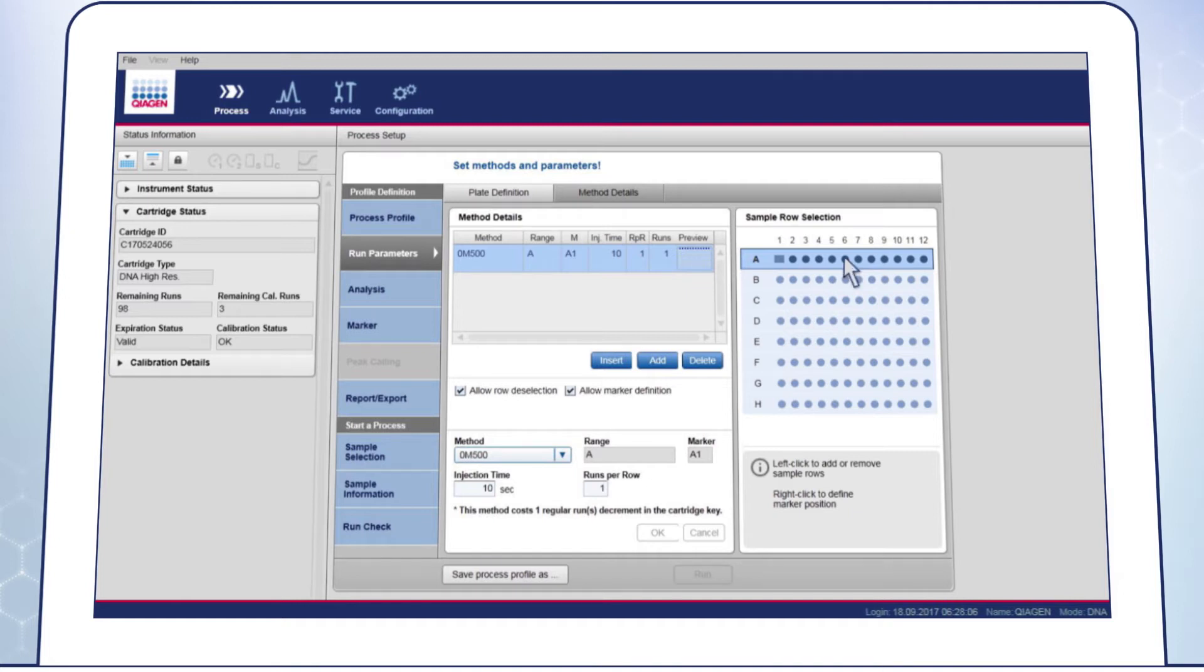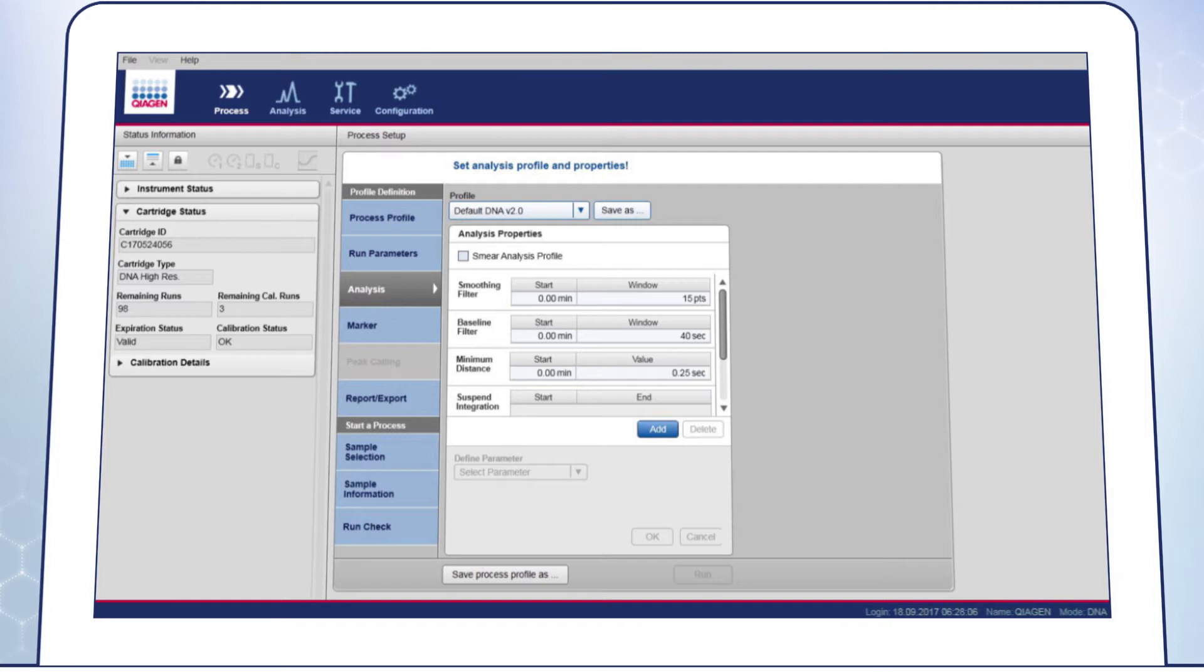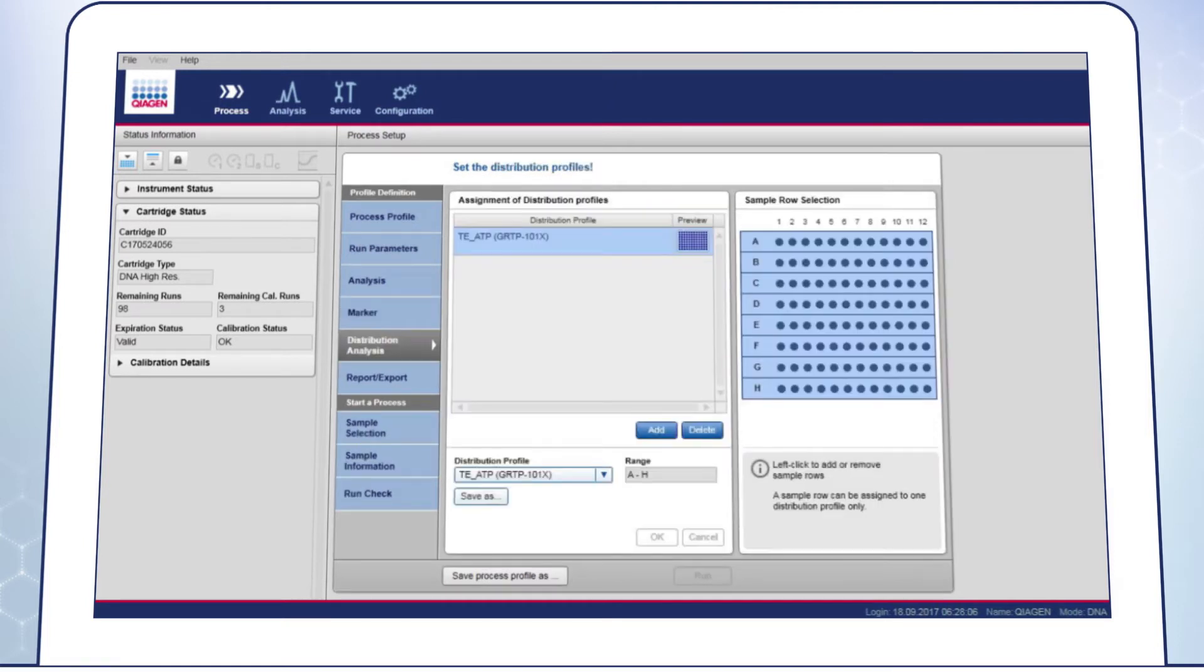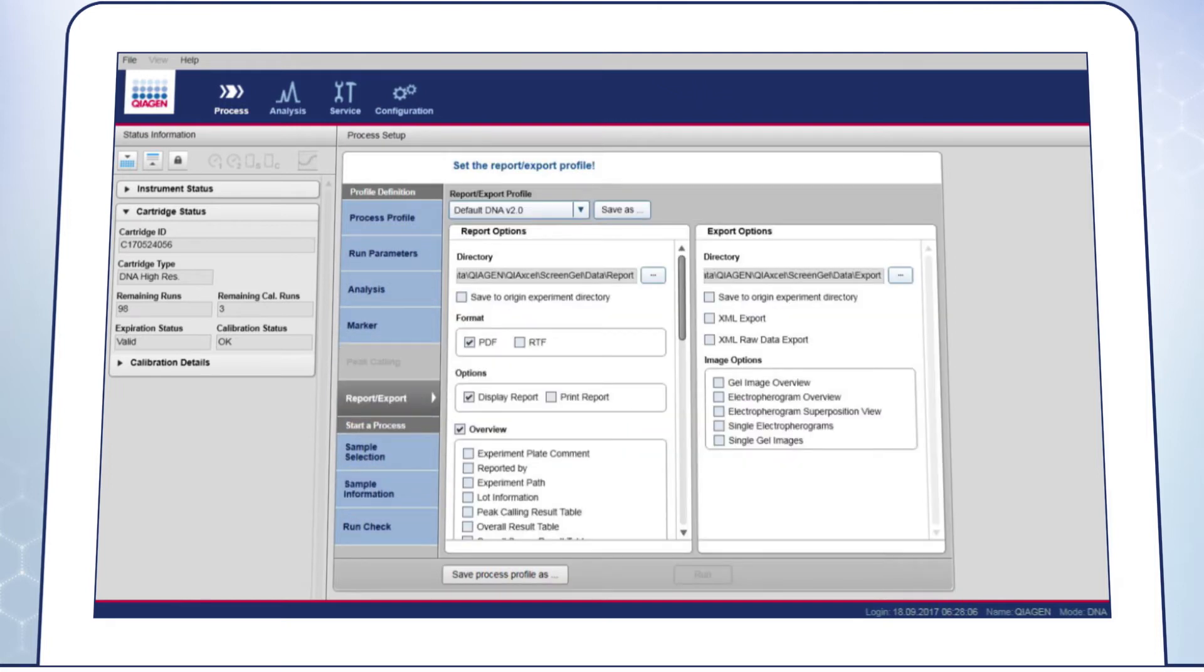On the Analysis screen, you can select a default or customized analysis profile which will directly be applied right after the run. On the Marker screen, you can select a size marker and an alignment marker. On the Distribution Analysis screen, select which samples need to be analyzed with which profile. On the Report Export screen, you can select a default or a customized report export profile defining which data are included in the report and how they are visualized.